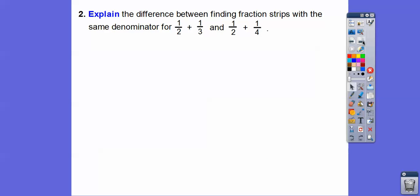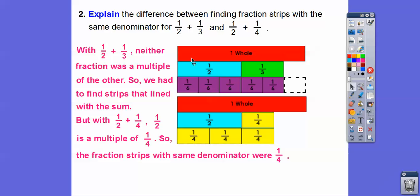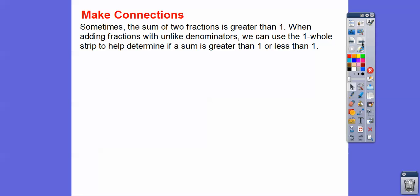Let's explain the difference between finding fraction strips with the same denominator for one half plus one third versus one half plus one fourth. With one half plus one third, neither fraction was a multiple of the other, so we had to find another fraction strip that lined up exactly at the sum — we had to mix and match. But with one half plus one fourth, one half is a multiple of one fourth, so the fraction strips with the same denominator are just the one-fourth strips. If one denominator is a multiple of the other, that larger denominator will most likely be your answer.